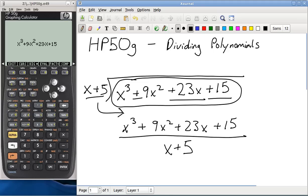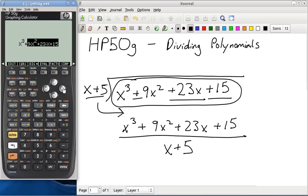How you do that on the calculator is you hit the right arrow key, highlight everything, and hit the divide button. You see it's all now in the numerator of your fraction. Now we're just going to put in the x plus 5.